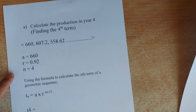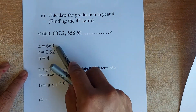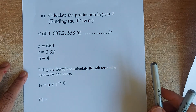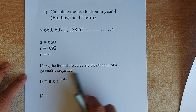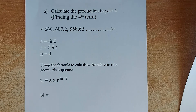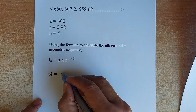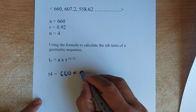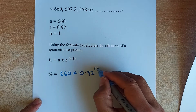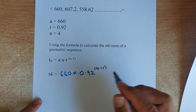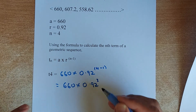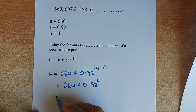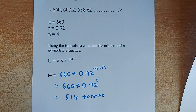We use the formula T4 equals A multiplied by R to the power of (N minus 1). Replace A with 660, R with 0.92, and N minus 1 is 4 minus 1 equals 3. So it simplifies to 660 times 0.92 to the power of 3. Put this in your calculator, and the answer is 514 tonnes. That will give you an achieve.